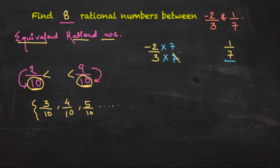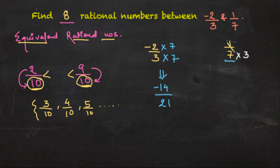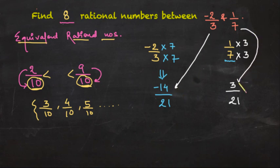So this rational number changes to negative 14 upon 21 — since negative 2 times 7 is negative 14 and 3 times 7 is 21. For the other number, 1 upon 7, I multiply the denominator by 3 to get 21, and do the same to the numerator: 1 times 3 is 3 and 7 times 3 is 21, giving 3 upon 21. Now it is very easy to visualize these two rational numbers because we have written their equivalent form.